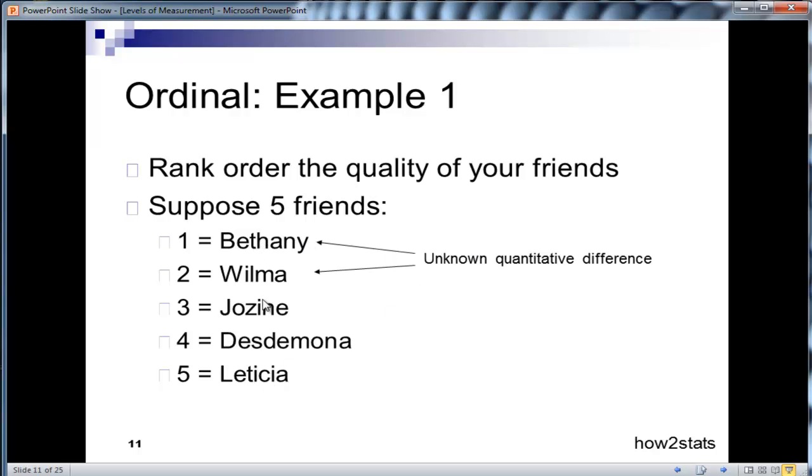So although it's true there's an order to these categories, from best to worst, we don't actually know what the difference is between Bethany and Wilma in an ordinal scale, which is rank ordered in this case. That is, Bethany might be a really great super friend, but Wilma, Josine, Desdemona, and Leticia might just be not very close friends. So the difference between one and two is very substantial, but the difference between two, three, four, and five is really minimal because Wilma, Josine, Desdemona, and Leticia are basically not very close friends, and Bethany is by far the best friend. This is what is meant by there is no meaningful difference between the categories or quantifiable difference between the categories in an ordinal scale. We just don't know. We just know that there's an order to them from highest to lowest.